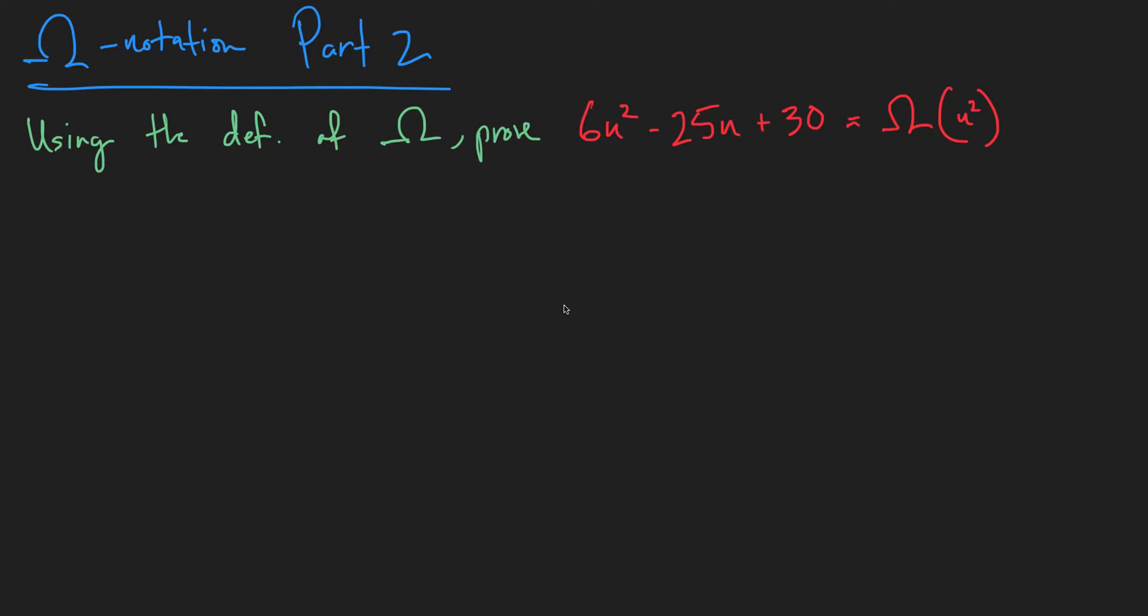Welcome to the second part of our second video with data structures and algorithms. We're going to use the definition of big omega to prove that 6n squared minus 25n plus 30 is big omega n squared.